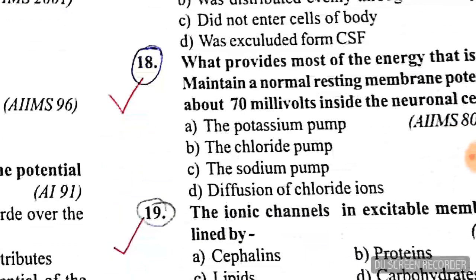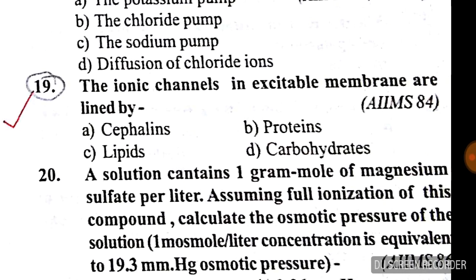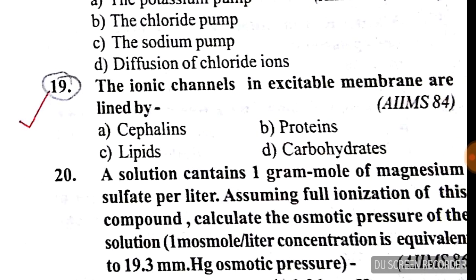Question number 18: what provides most of the energy used to maintain a normal resting membrane potential of about -70 millivolts inside the neuronal cell? See all four options — the answer is A, potassium.